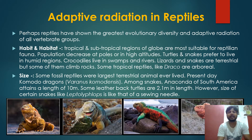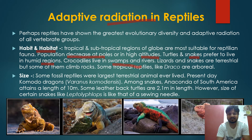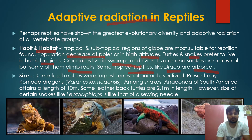Now, adaptive radiation in reptiles: reptiles have shown the greatest evolutionary diversity and adaptive radiation of all vertebrates. In terms of habitat, tropical and subtropical regions have the maximum reptiles, while they are least found at poles or high altitudes. Turtles and snakes prefer humid regions, crocodiles live in swamps and rivers, while some tropical reptiles like flying lizards are arboreal in nature.